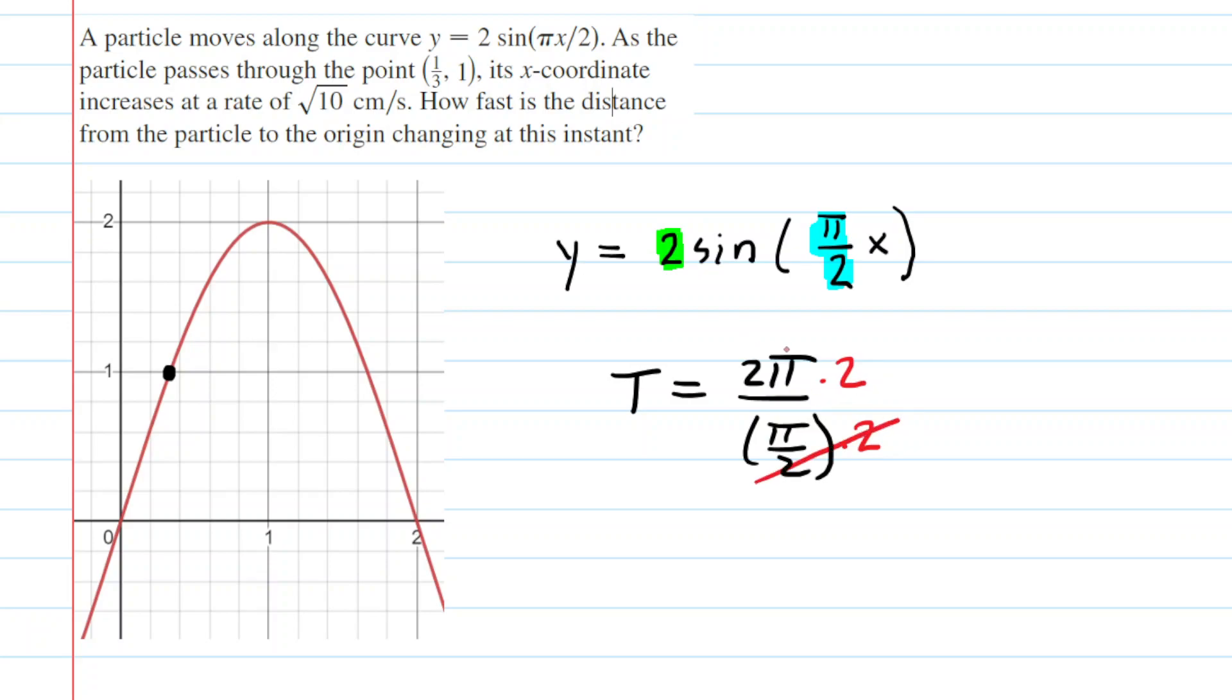That would cancel these 2s. The π's would cancel. And then when you multiply 2 by 2, you get 4. So the period of this curve is equal to 4.